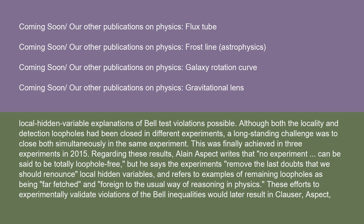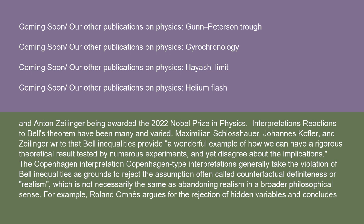Regarding these results, Alain Aspect writes that no experiment can be said to be totally loophole-free, but says the experiments remove the last doubts that we should renounce local hidden variables, and refers to examples of remaining loopholes as being far-fetched and foreign to the usual way of reasoning in physics. These efforts to experimentally validate violations of the Bell inequalities would later result in Clauser, Aspect, and Anton Zeilinger being awarded the 2022 Nobel Prize in Physics.